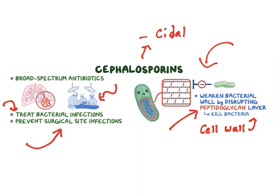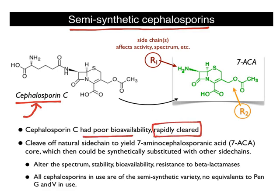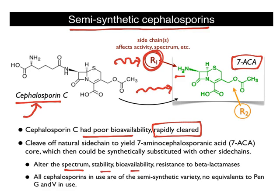All cephalosporins are semi-synthetic. The natural cephalosporin isolated from fungal species, cephalosporin C, had very poor bioavailability and was rapidly cleared. Chemical processing resulted in the formation of 7-aminocephalosporanic acid, and all available cephalosporins are semi-synthetic, with changes in the R group attached to the amine side chain. The spectrum, stability, bioavailability, and resistance to beta-lactamase are all altered by this R group.